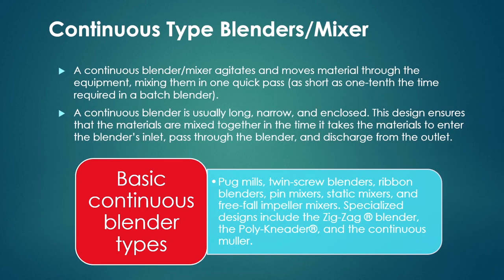Continuous blenders or mixers agitate and move material through the equipment, with mixing happening in a quick pass — as short as one-tenth the time required in a batch blender. This continuous type is usually long, narrow, and enclosed, ensuring that materials get mixed from the blender's inlet through to its outlet. Basic continuous blender types include pug mills, twin screw blenders, ribbon blenders, pin mixers, static mixers, and free-fall impeller mixers. Specialized designs include the zigzag blender, poly kneader, and continuous muller.